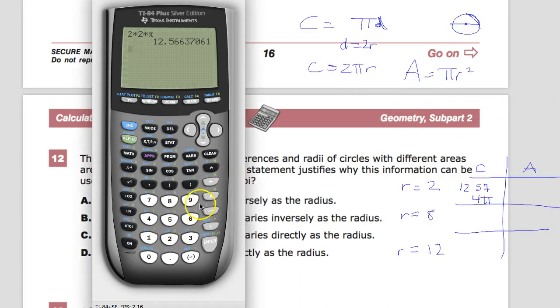And I get 12.56, or 12.57 if I round to the hundredths. Or I might say 2 times 2 is 4, so 4 pi. I can do the same thing for 8. 2 times the radius of 8 times pi. 50.27, and that would be 16 pi. And then 2 times 12.